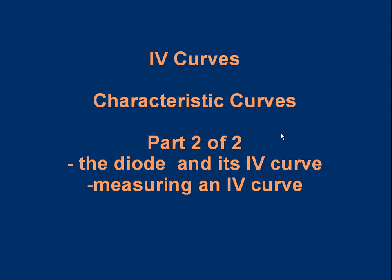Hello and welcome to the second part of the lesson on IV curves, current voltage curves, sometimes called characteristic curves. In part one we looked at what a characteristic curve is, how to measure it, what it looks like for a filament bulb and resistor. In this part we're going to take a look at the diode and what its IV curve looks like.